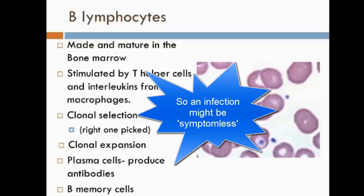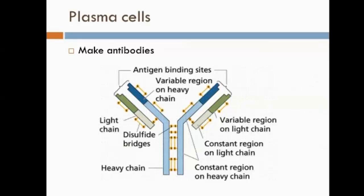Plasma cells are the B lymphocytes that produce antibodies. Antibodies are specific to the antigen and take quite a bit of time to be made. The variable region binds to the antigen and changes with each different antibody. The hinge region in the centre is essential, allowing multiple pathogens to bind to the variable region at the same point. Once an antibody has bound to a pathogen, it becomes immobilised and cannot enter a host cell. Antibodies can also cause agglutination of several pathogens together, making it easier for phagocytes to remove them all at once, and can specifically target bacterial cell walls, resulting in cell death.